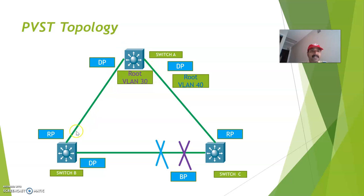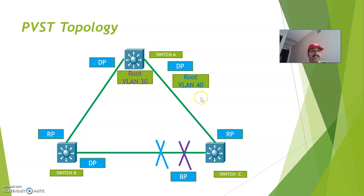A segment will have one designated and one root port. This is a non-designated, or we call it a blocking port. I have assigned VLAN 30 and 40 here, so for both VLAN 30 and 40 this switch will become the root switch. For both these VLANs, this will become the blocking or non-designated port.